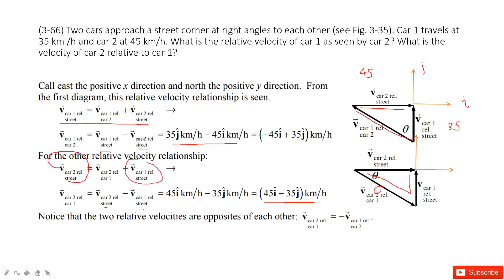Very easily and very straightforwardly, we can see that the velocity of car one relative to car two and the velocity of car two relative to car one must satisfy this equation: they have the same magnitude but opposite directions.